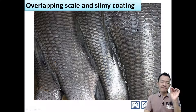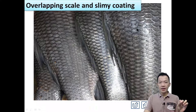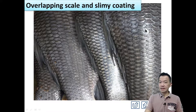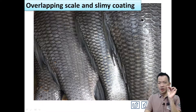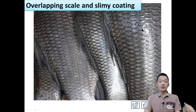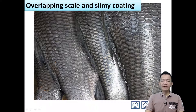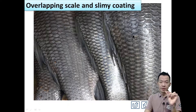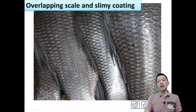Besides the fins, how can fish move very fast in the water? Fish actually have overlapping scales and a slimy coating on their body — one layer of overlapping scales, and on top of all the scales there is a slimy, sticky coating. The function of these overlapping scales and slimy coating is to reduce friction, or to reduce the resistance for movement in the water.